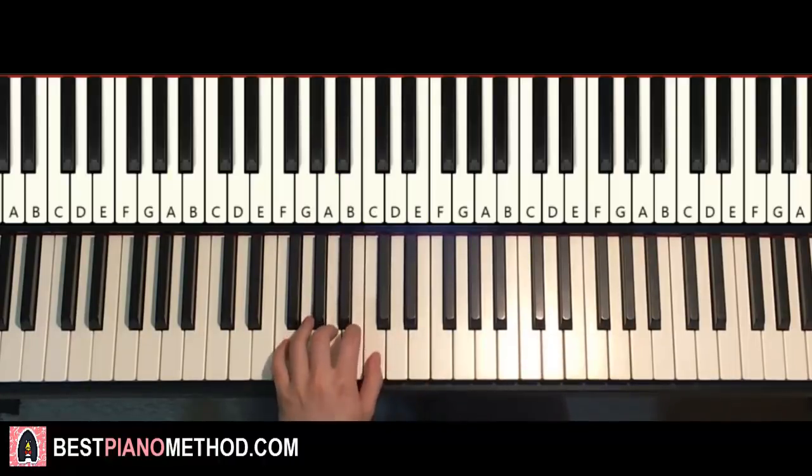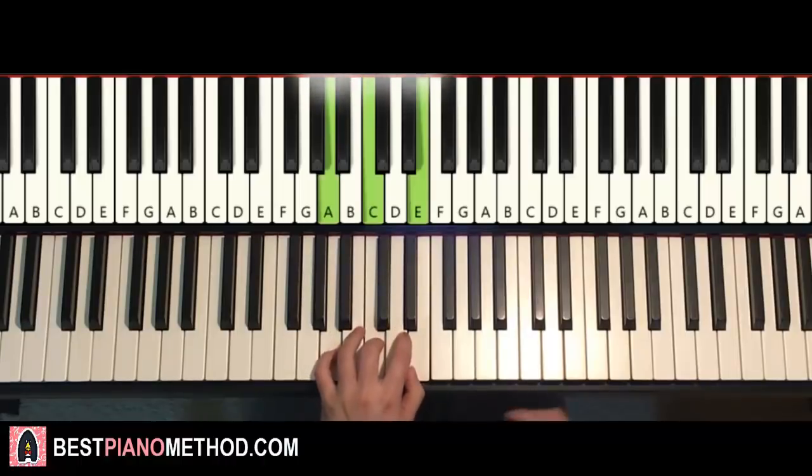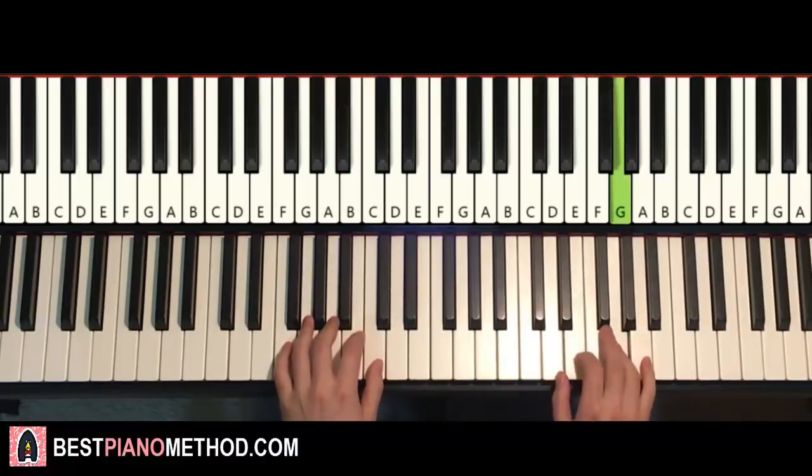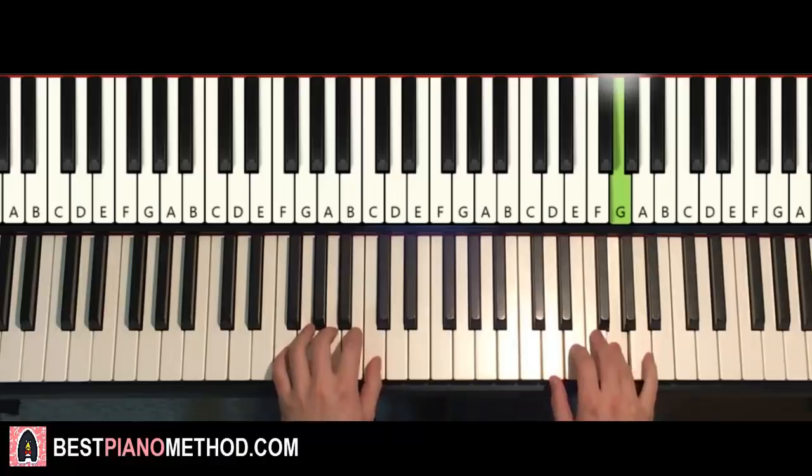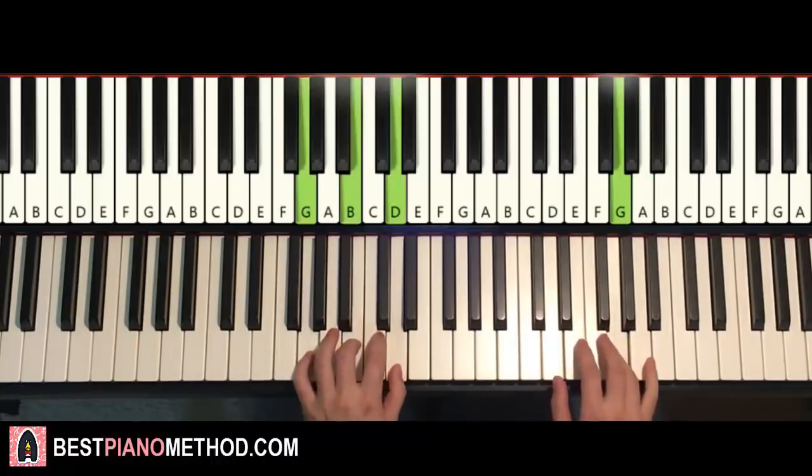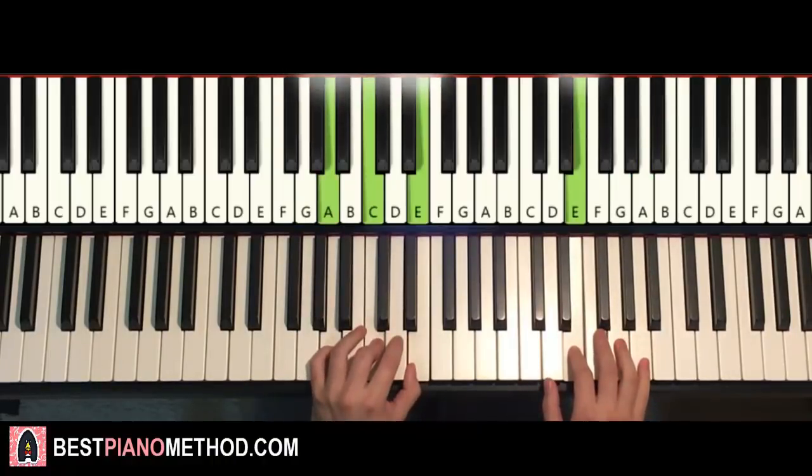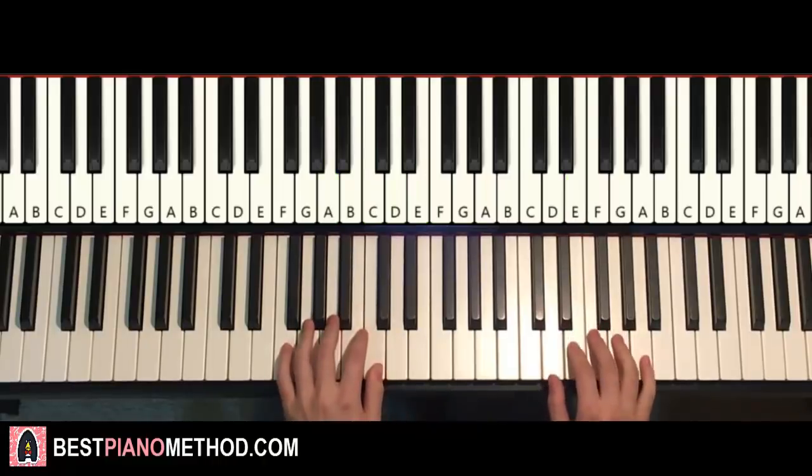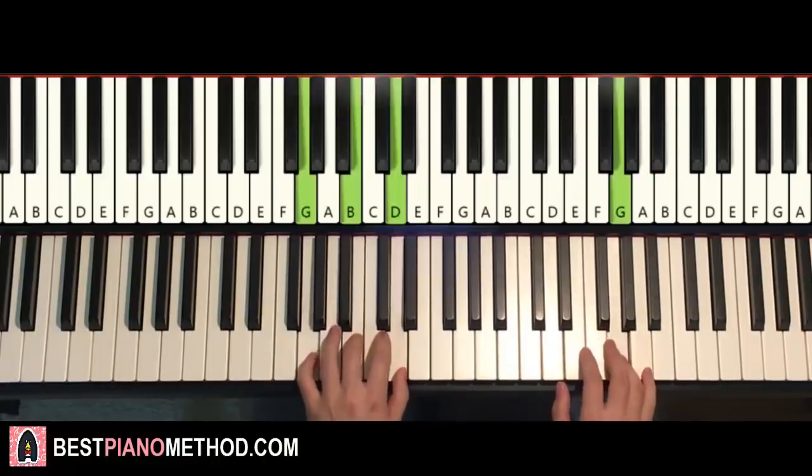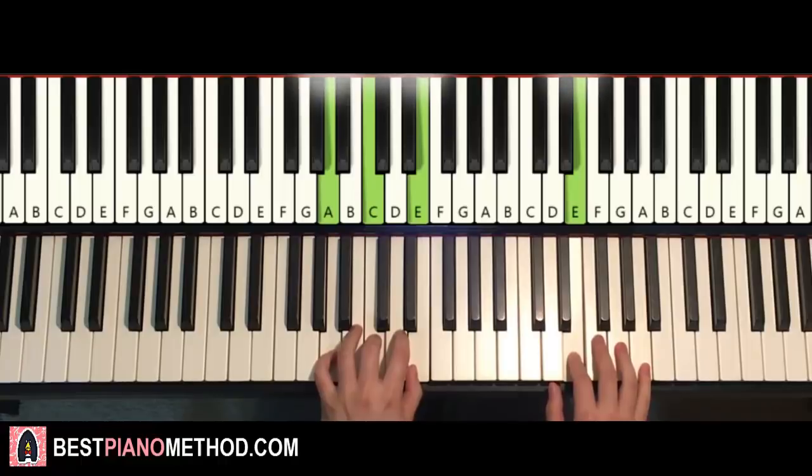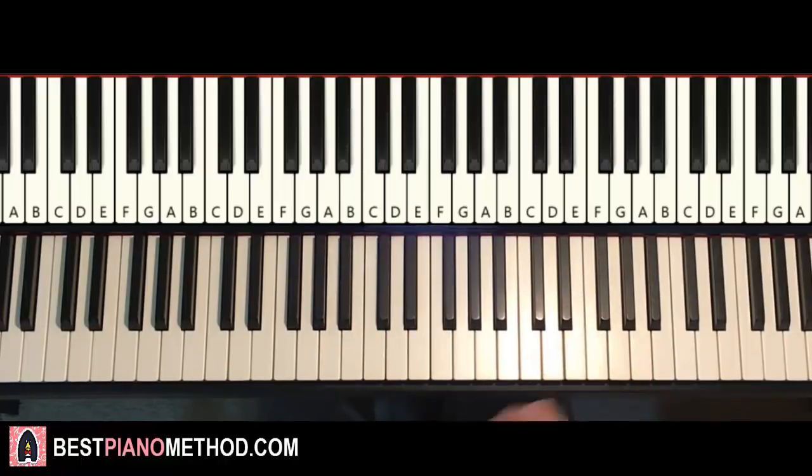So with these three chords in mind, F major, G major and A minor, the two hands together goes like this. Right hand starts E and F major together, G and G major together, E and A minor together. That's the first part. One more time. And that's the first part. Let's move on to the second part.